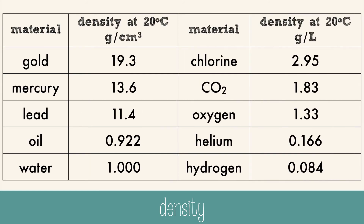Density is a relationship of mass and volume. It's often written as grams per cubic centimeter, or grams per liter. One gram per cubic centimeter is the same as a thousand grams per liter. And since gases have such low density, we use grams per liter instead of grams per cubic centimeter, so that we have larger numbers to deal with.